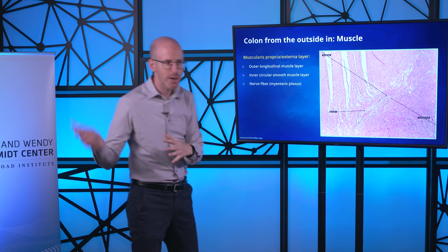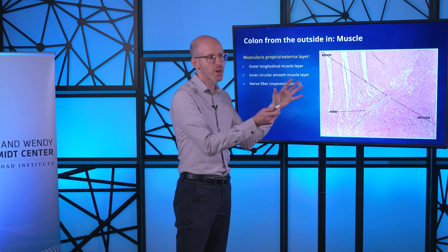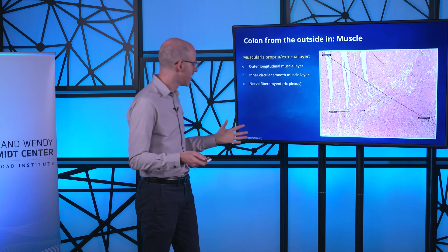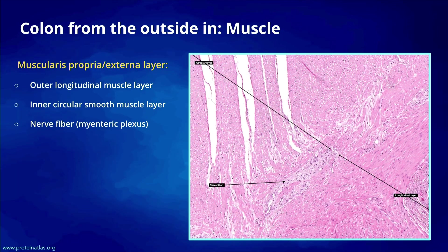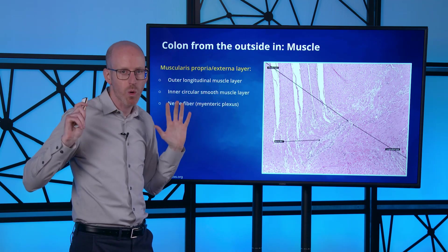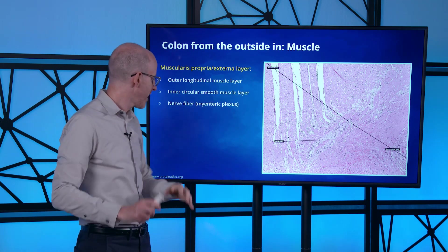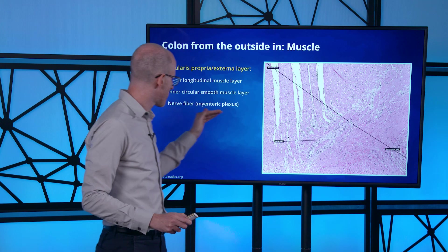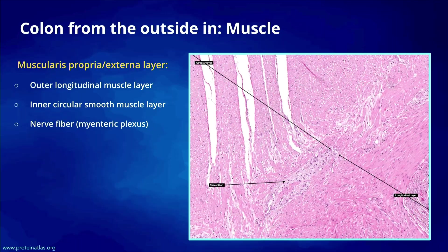Going from the outside in, here's a zoom of the H&E of colon muscle. There are two layers: a longitudinal layer and a circular layer, which are important for pushing food through the gut. In between the layers, there's a nerve fiber called the myenteric plexus, which among other things controls peristalsis — the movement of food through the gut.